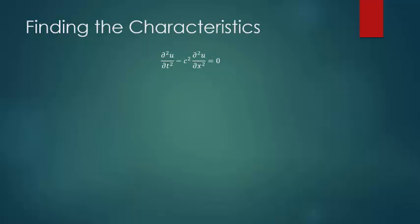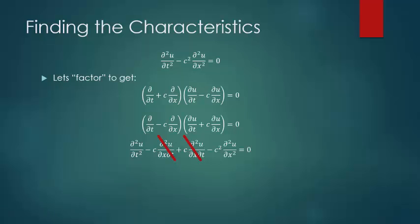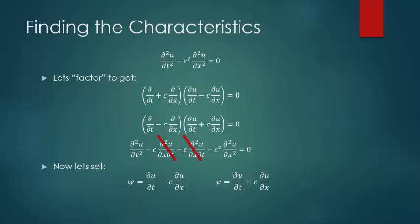To find the characteristic equations from our two-dimensional wave equation, we want to simplify this into two separate one-dimensional wave equations. To do that, we're going to factor this two-dimensional wave equation into two separate equations. To prove that this works, if you take either one of these and expand them out, those two middle terms will cancel, which will match up perfectly with our original equation. So we're going to set w and v equal to these two parts of the factoring, and use these to simplify them further into creating two one-dimensional wave equations.